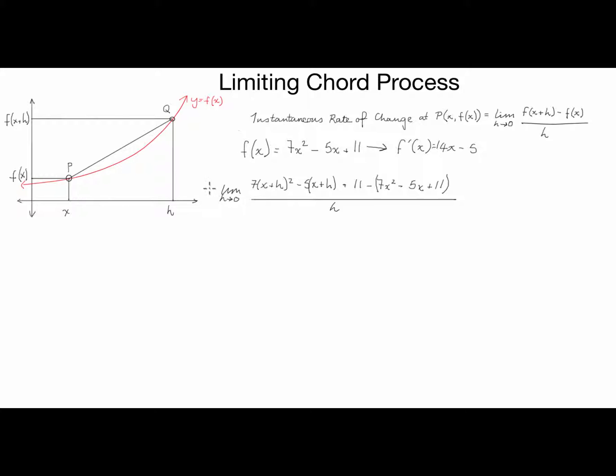Cool. Now, the next step is to multiply out our brackets. So we've got the limit as h tends to 0 of 7—now, this is x² + 2xh + h². Now, if you don't know how I did that binomial expansion, I think you should probably stop this and check that out in your textbook or something. Minus 5x + 5h + 11.